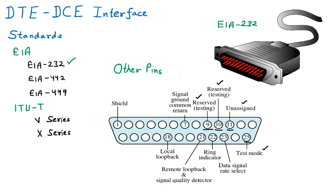Pin number 1 is for shield — related to current flow protection. Pin number 18 is for local loopback — when testing, data is sent and comes back to you in a loop locally. Pin number 21 is for remote loopback — when data is sent to a remote location and comes back to you. Pin number 21 handles remote loopback and also relates to signal quality detection.